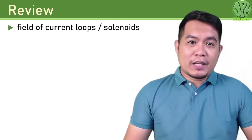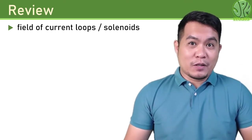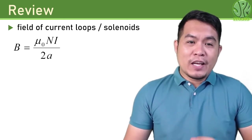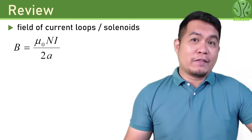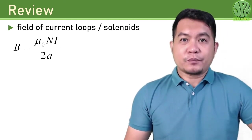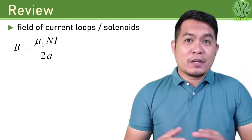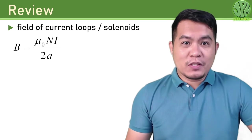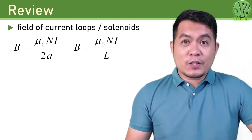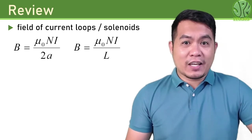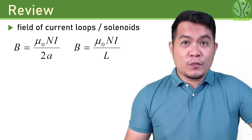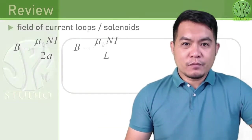In the previous chapters or lessons we have discussed about the field of current loops and solenoids. If you have a current loop with radius a and n turns carrying a current i, then this is the magnetic field given by that current loop. Now if your current loop has a length that is much greater than its radius, then we usually call that a solenoid. For a solenoid of length l and number of turns n carrying a current i, this is the magnetic field of that solenoid.